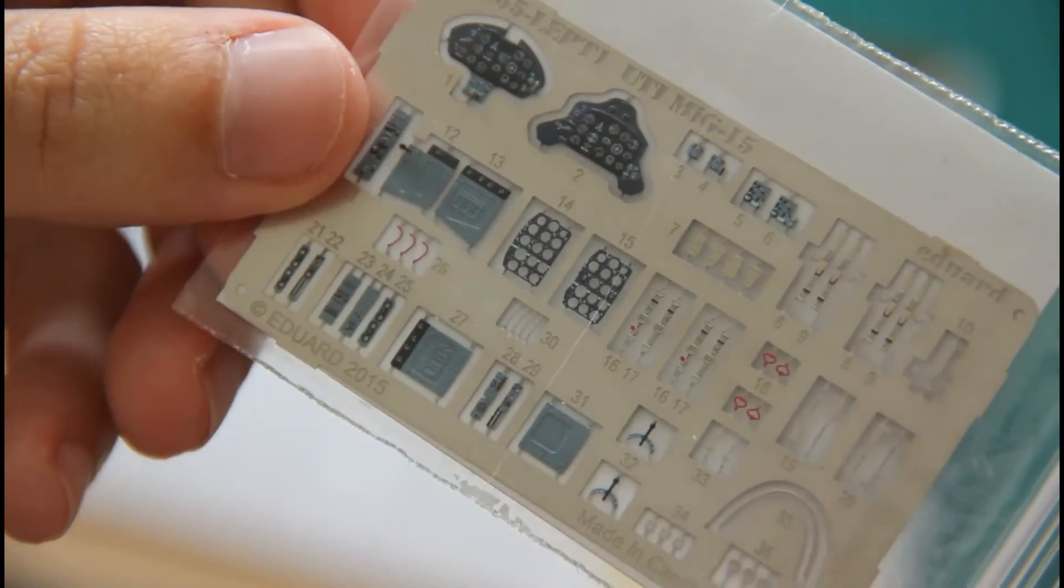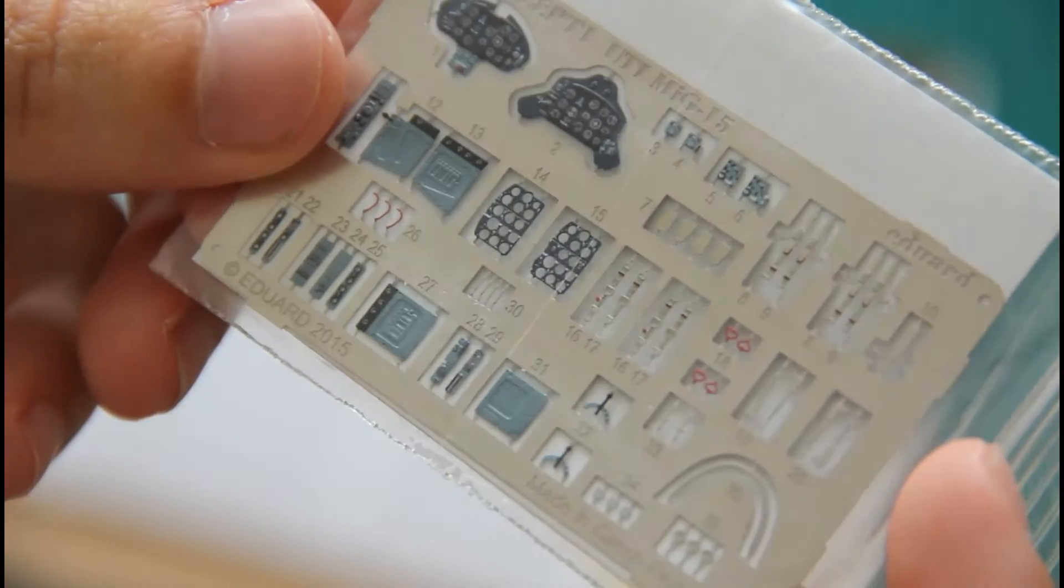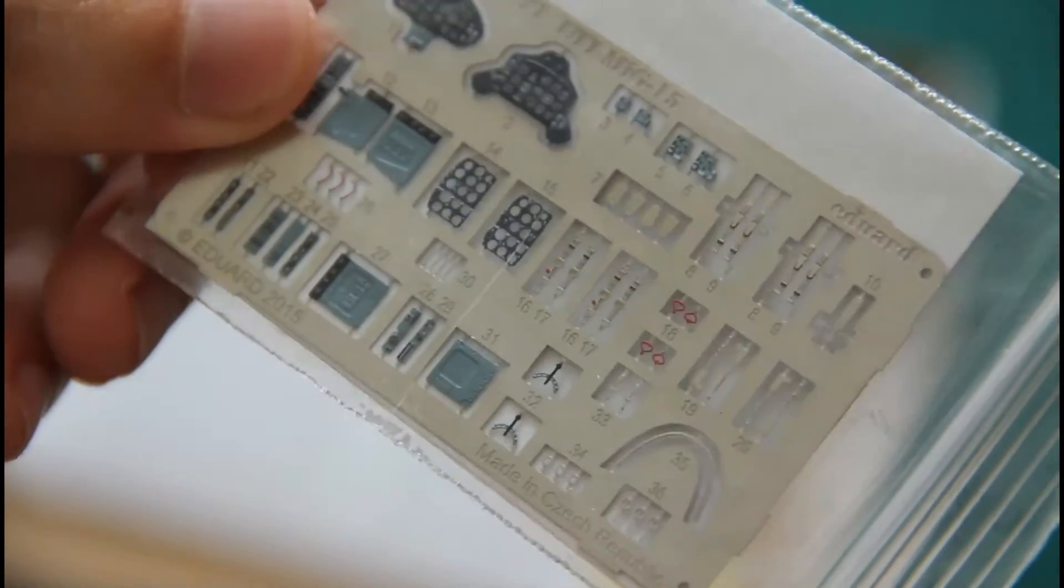Next we have a small bag with PE parts, here you can see them. So we have some parts for the cockpit, I would say that like 95% of those parts would go onto the cockpit so it should be quite detailed for such small aircraft. Then we have masks, I really appreciate this inclusion because MiG-15 has a complex canopy shape and it can be quite difficult to mask all those complex forms.